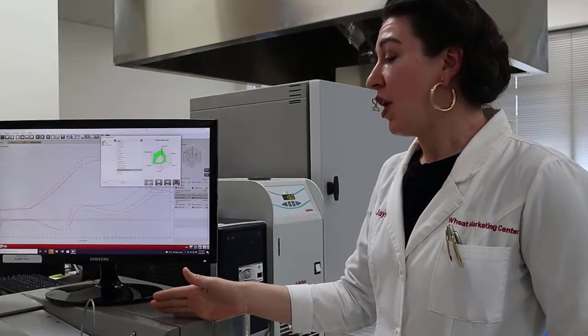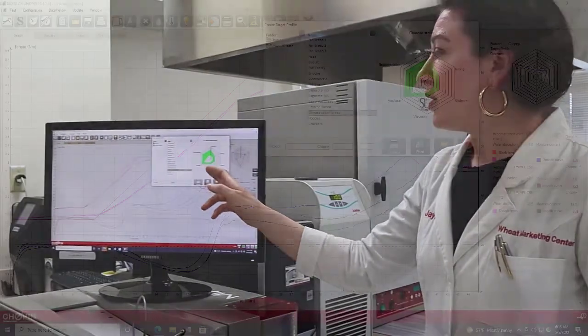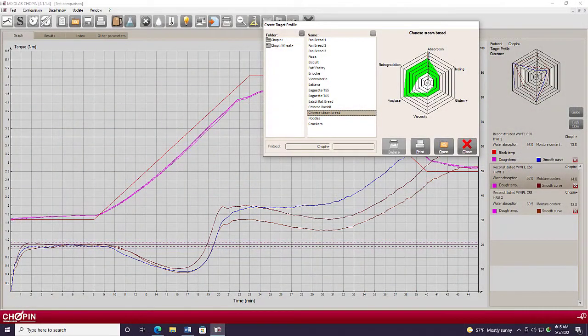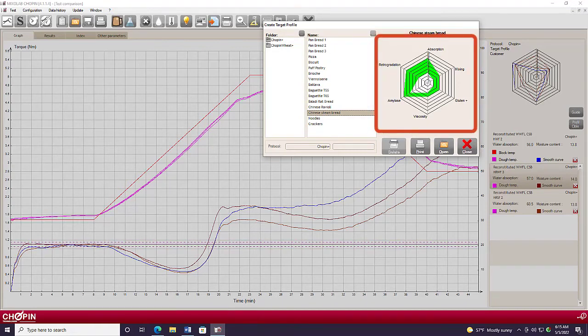How can the MixoLab be used to improve the communication between Miller and Baker? One of the functions that the software offers is this six-point spider graph characterizing each flour. So what I've done here is I've loaded the curves for three different flours that we were using for Chinese steam bread production. And I've also loaded our Chinese steam bread profile here.